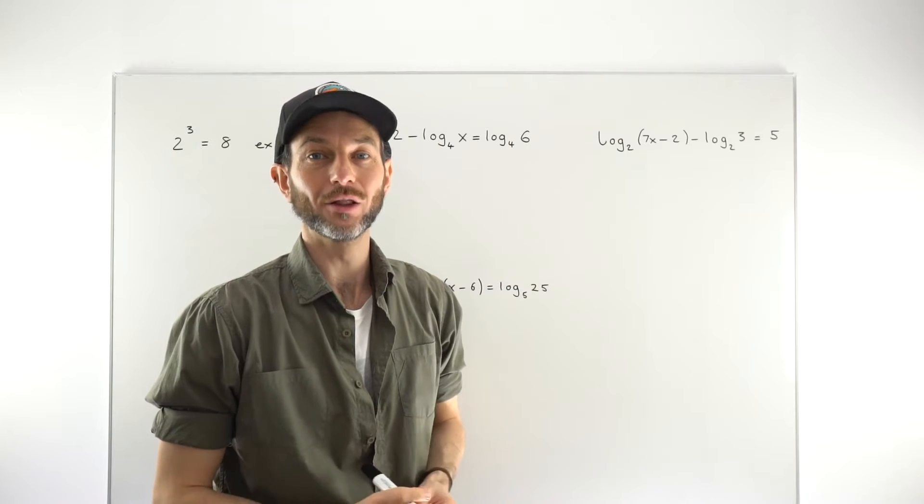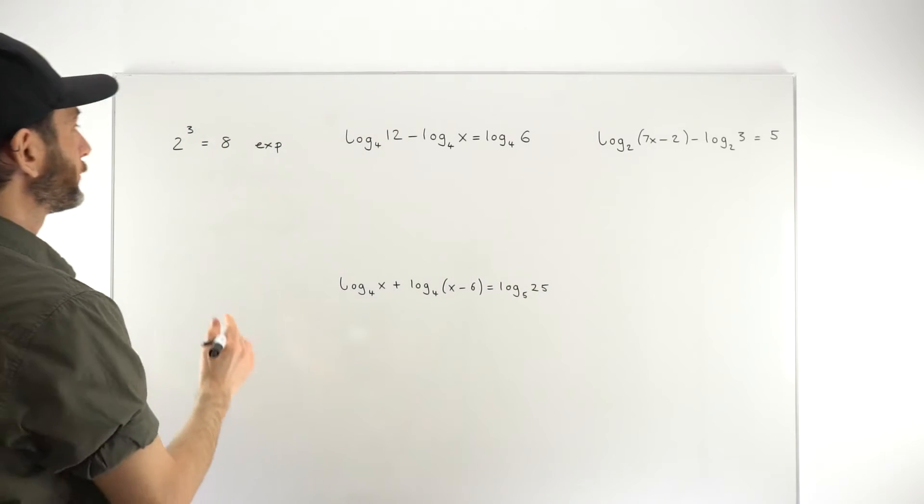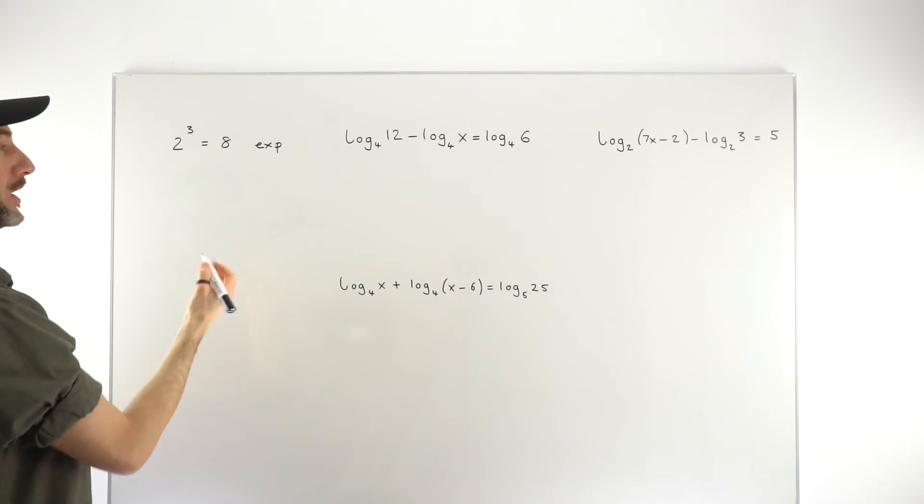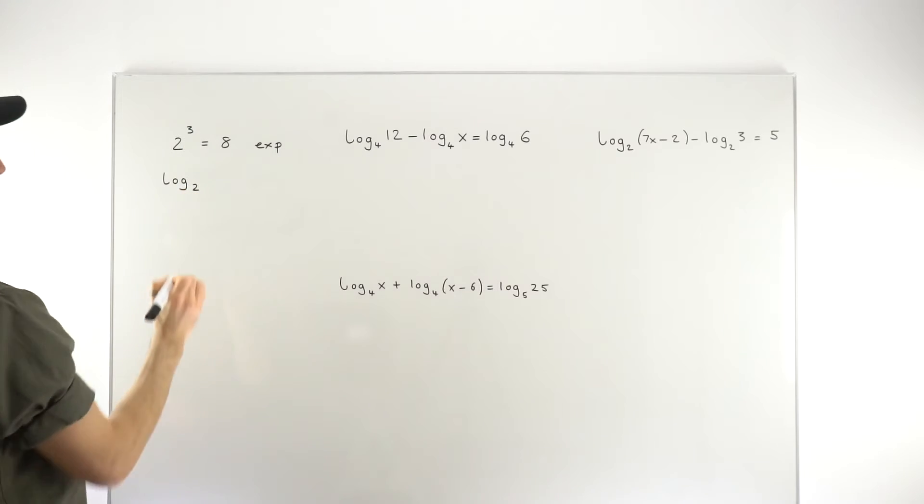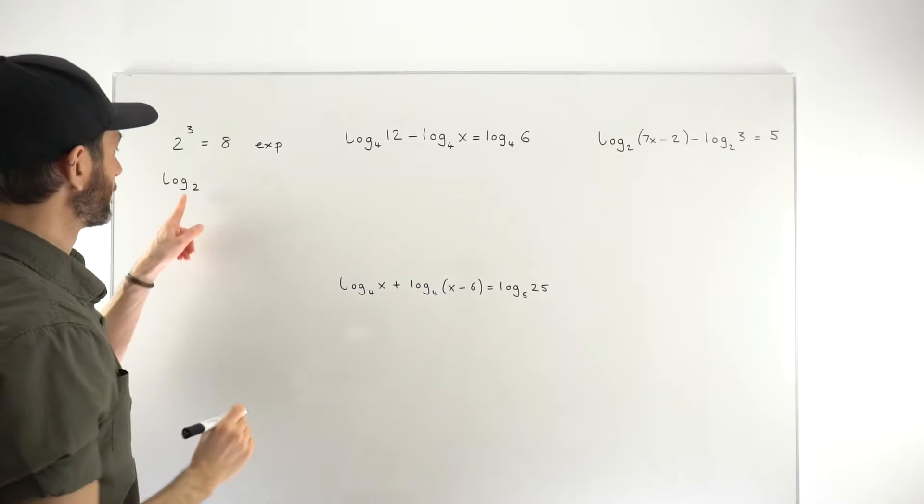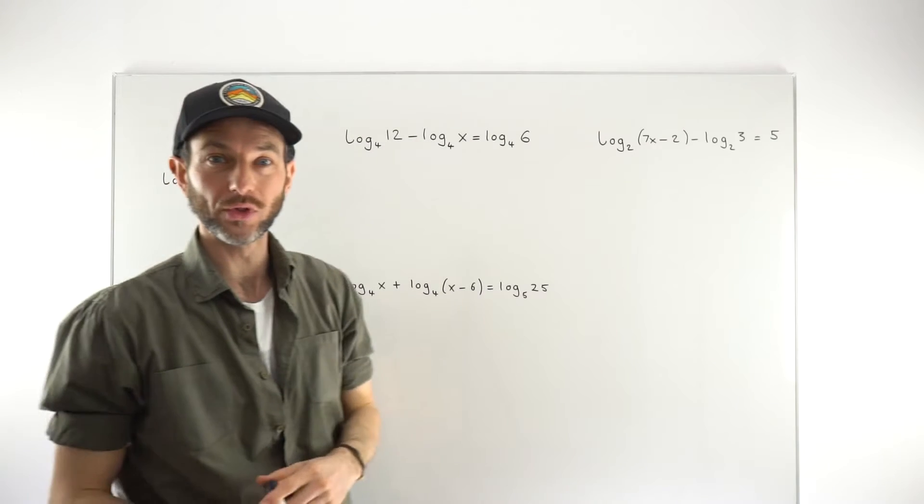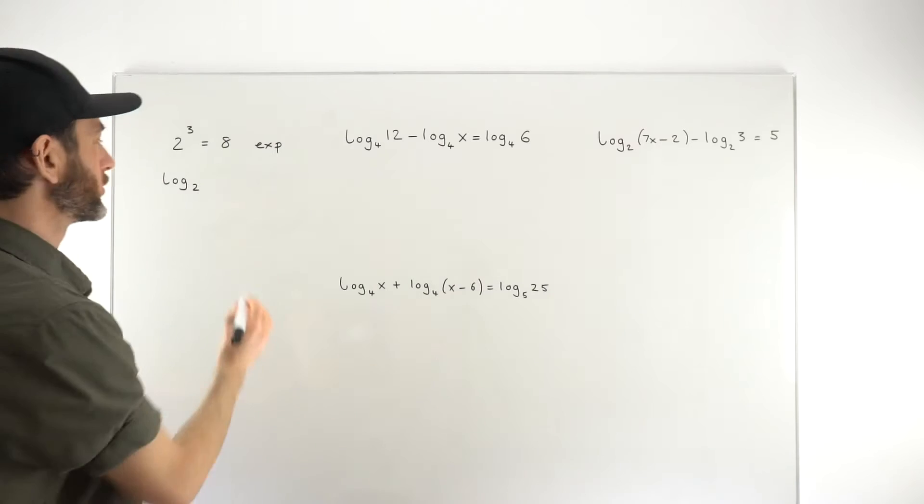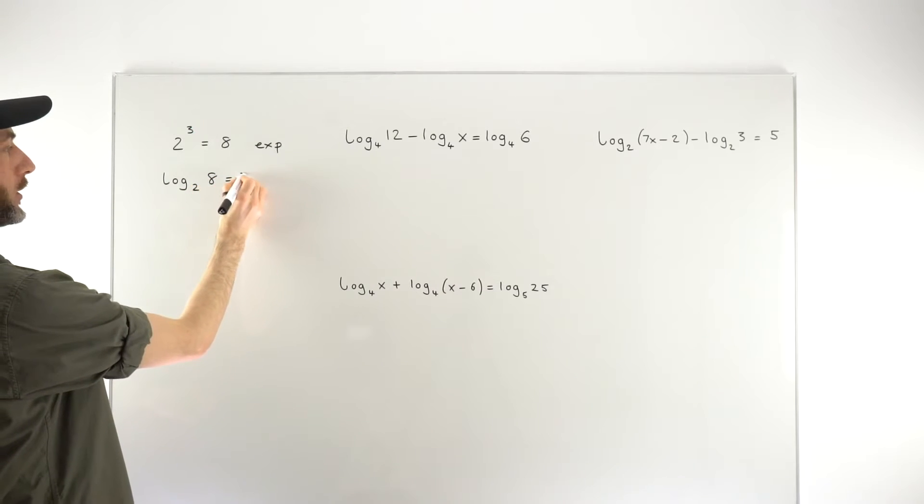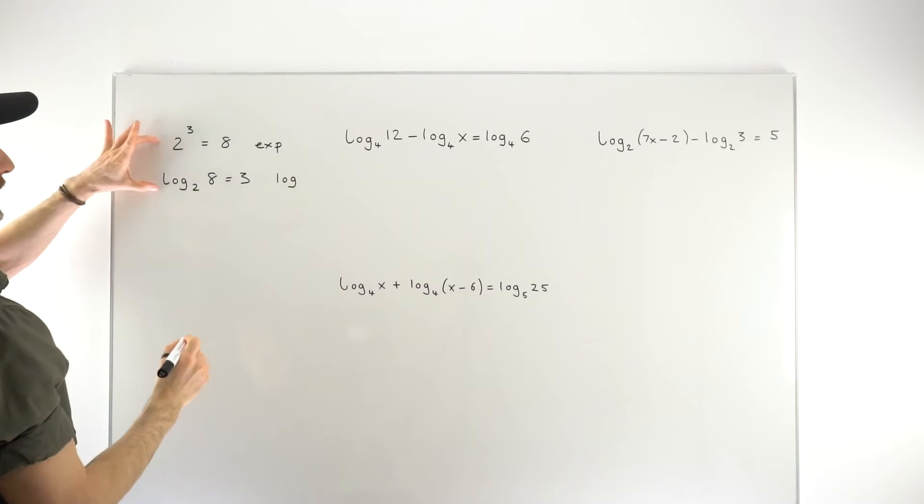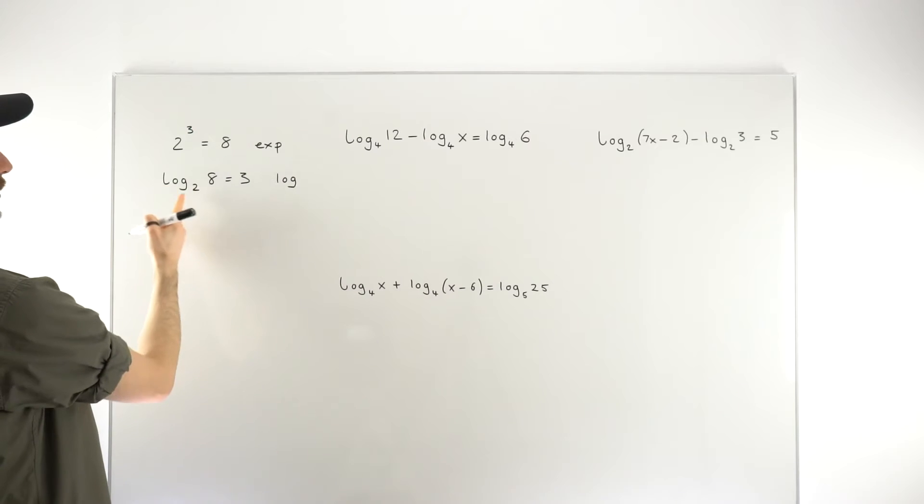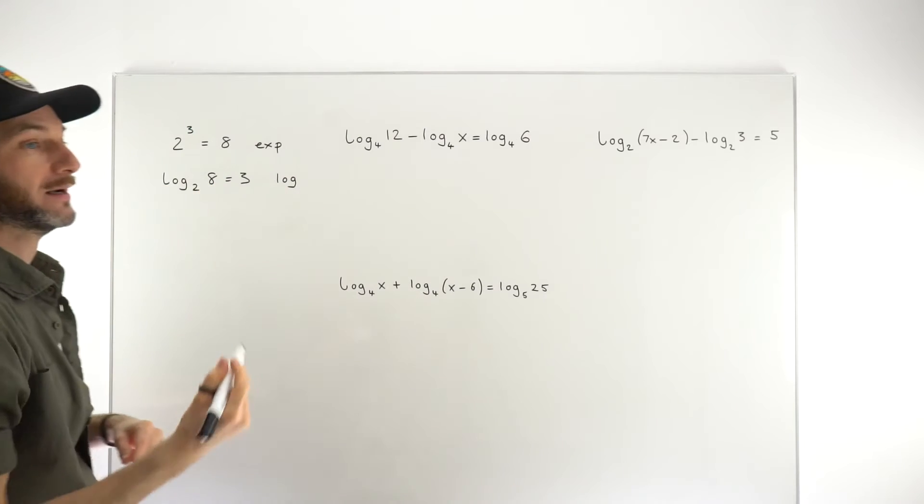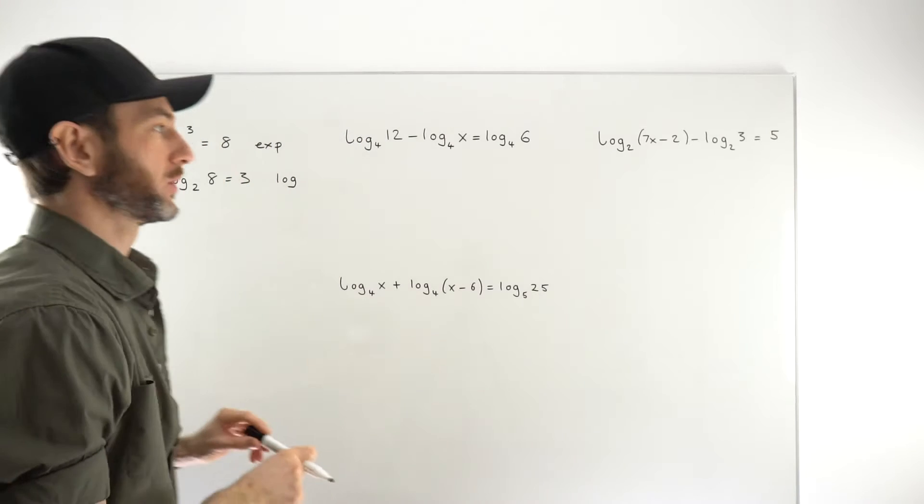We want to be able to convert that into the log form. The log form just takes these numbers and reorders them. Logs are less intuitive than exponentials. You've got to think of them as an exponential backwards. But this expression can be written as a log by writing log to base 2. Notice that the base on the logarithm and the base on the exponential are the same. Log to base 2 of 8 equals 3. These are saying the same thing, just in a different way.